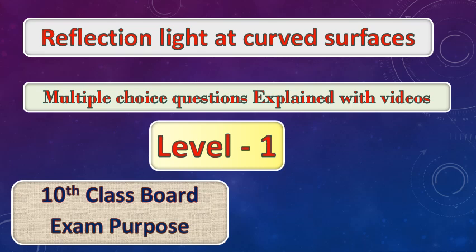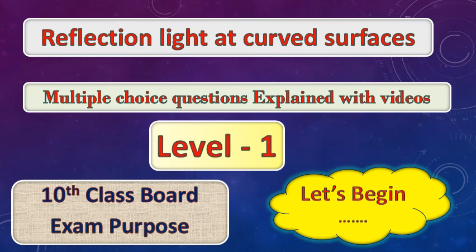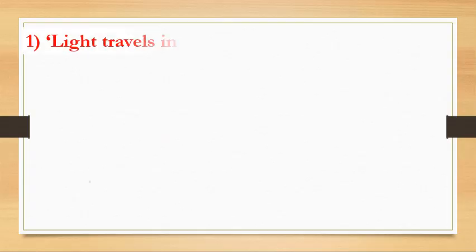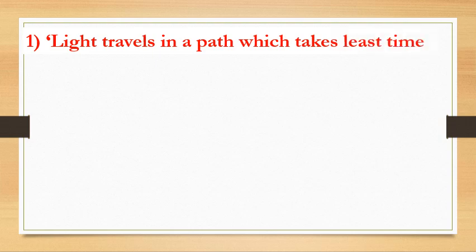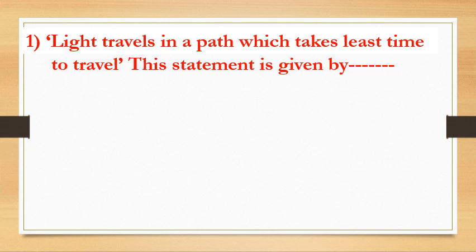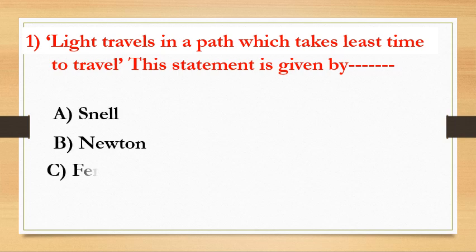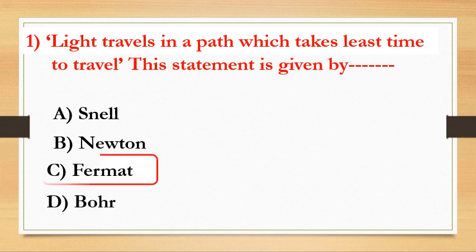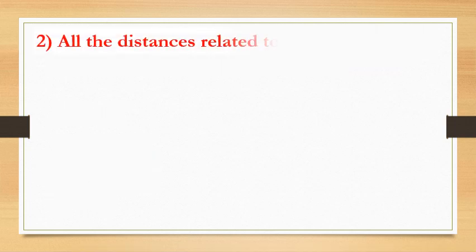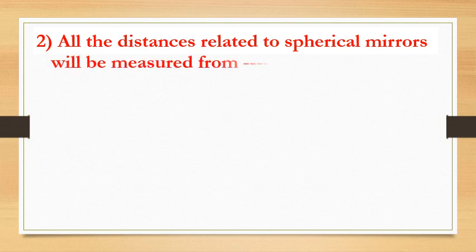Let's start. First question: the light travels in a path which takes the least time to travel — this statement was given by Snell, Newton, Fermat, or Bow? The answer is Fermat.